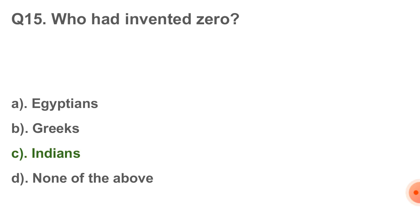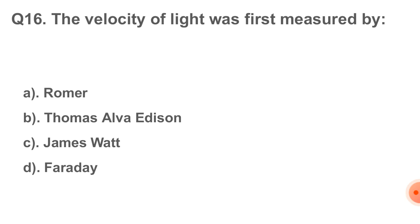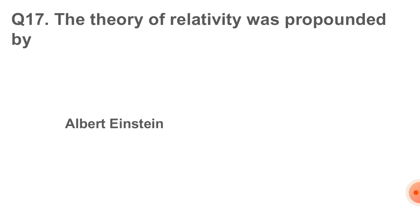Next question: the velocity of light was first measured by. The correct answer is option number A, that is Romer. Question number 17: the theory of relativity was propounded by. The correct answer is Albert Einstein.